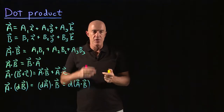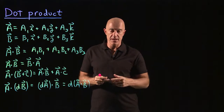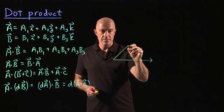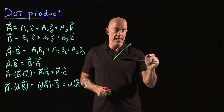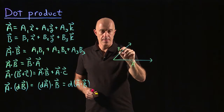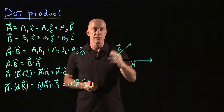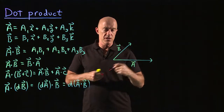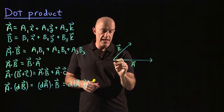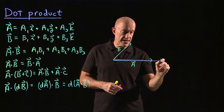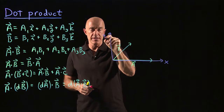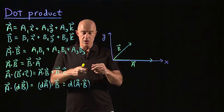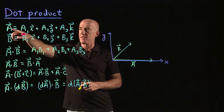There's another way of defining the dot product that's more geometric. If we look at two vectors — vector A and vector B — we can define a coordinate system to compute the dot product. We're free to choose any coordinate system we want, so let's choose one where the x-axis is along vector A and the y-axis is perpendicular.